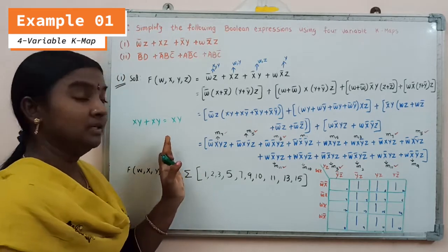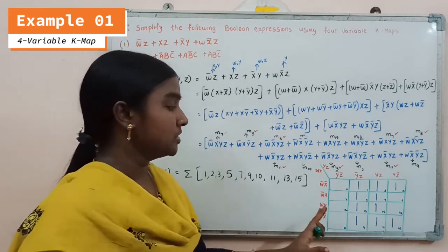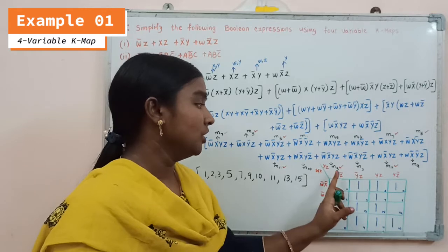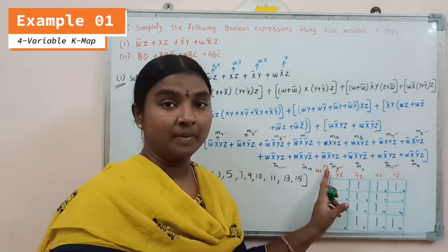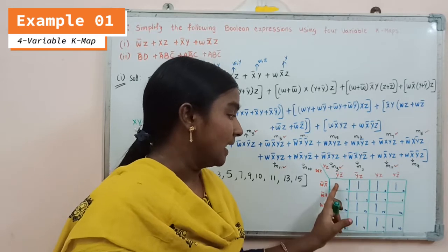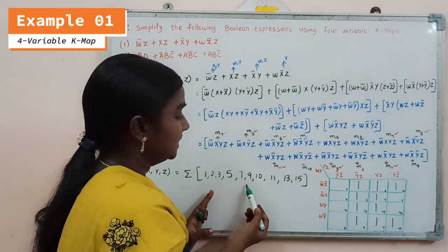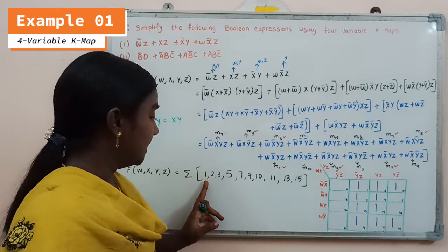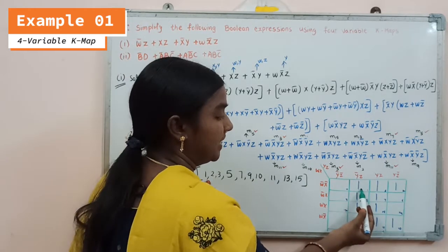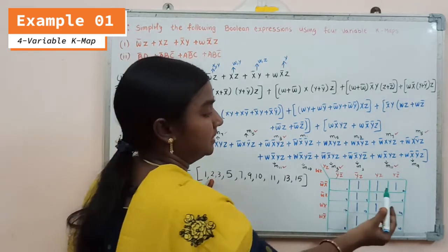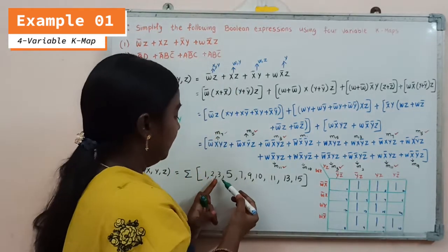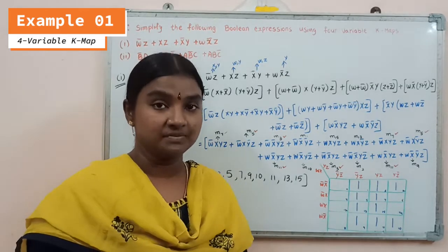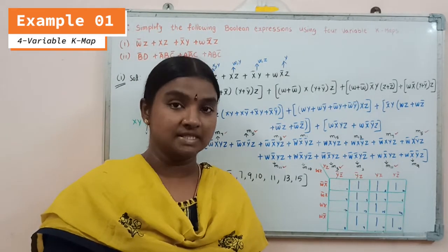This function has 4 variables, so we need to use a 4-variable Karnaugh map. On the row side, wx variables are common; on the column side, yz variables are common. After placing the minterm assignments, for whatever minterms are present in this function, we assign 1 to those cells. Minterm m1 is present, so we assign 1 there. Minterm m2 is present, so we assign 1 in that place. Minterm m3 is present and we assign 1 there. Similarly, for all minterms present in this function, we assign 1.